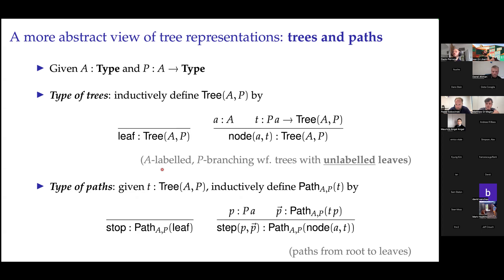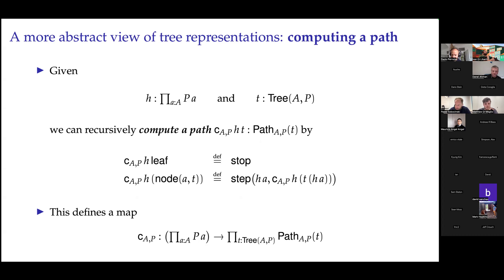We also define a type of paths — paths from the root of a tree to all possible leaves — consisting of steps choosing branchings at each node until we reach a leaf. Given a pi type (a dependent product) and a tree, we can recursively compute the path through the tree: if we're at a leaf, we stop; if we're at a node, we consult the argument H to determine which branch to take, then recursively compute the rest of the path.